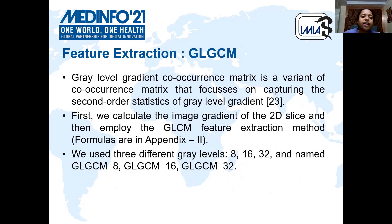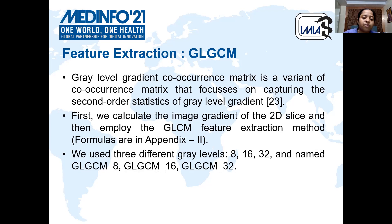The next method, GLGCM or Gray-Level Gradient Co-occurrence Matrix, is also a variant of the co-occurrence matrix that focuses on capturing second-order statistics. The only difference is that we first calculate the image gradient of the 2D slice and then apply the GLCM feature extraction method described in the previous step. Here also, we have used three different gray levels: 8, 16, and 32.